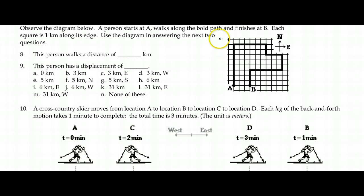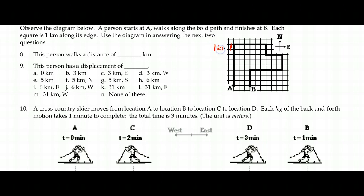Our first graphic is the motion of a person from A to B — they're taking a walk, and we're tracking their different individual motions until they get to point B. The length of each block here is one kilometer, so we're going to use that grid to figure out the distance moved by the person. We also have directions — north and east — to help us with the vector quantity of displacement.